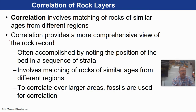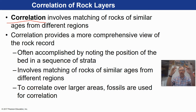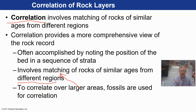The big thing with fossils that helps us in geology is that we can correlate different layers from different regions based on the fossils that are in them. This gives us a comprehensive view of the rock record throughout the planet — we can say these things were all deposited at the same time. We match up rocks of similar ages from different regions based on the fossils in them, using a principle called the principle of faunal assemblages. When fossils were alive over much of the earth at one point in time, we call those index fossils.